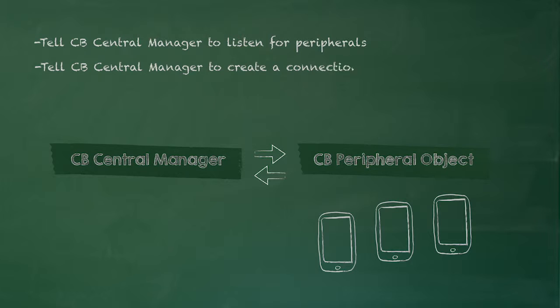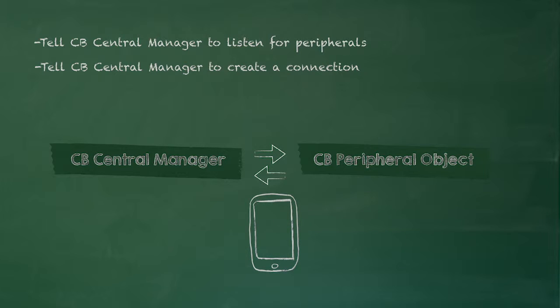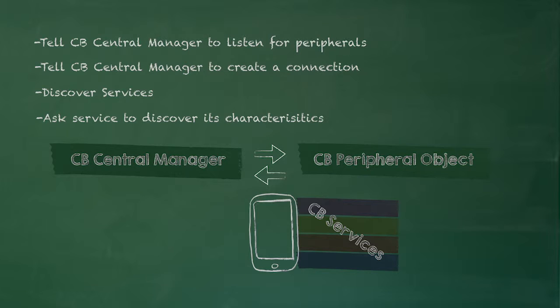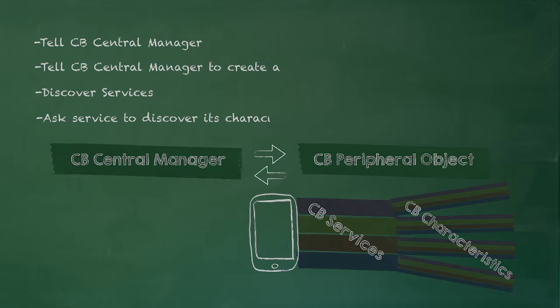Then you can ask the CB Central Manager to create a connection to that peripheral. Once a connection is made, you can then do a service discovery. Once the service discovery is done, you will have an array of CB services that will be attached to your CB peripheral object. Then you can ask any CB service to discover the characteristics that are part of that individual service. When that is complete, each of your CB services will have an array of CB characteristics that are attached to it.